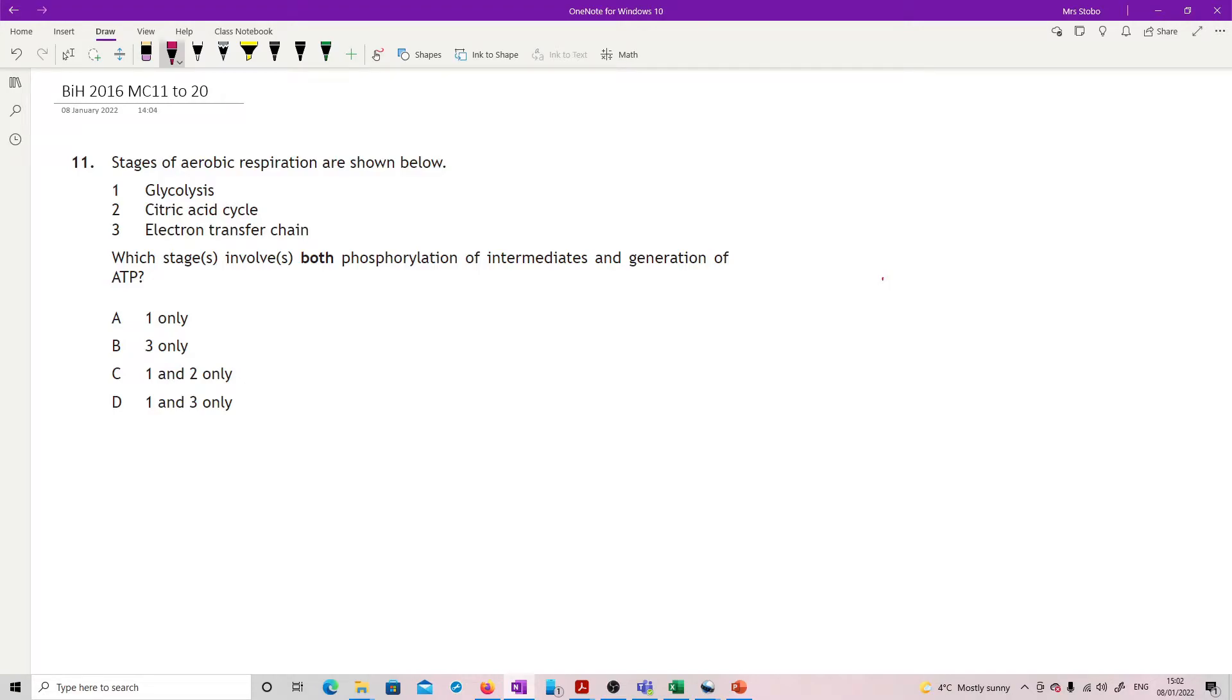Paper 11 to 20 on the multiple choice for the 2016 paper. Question 11: Stages of aerobic respiration are shown below. We've got glycolysis, citric acid, and electron transfer chain. Which stage involves both phosphorylation of intermediates and generation of ATP? It's the 'both' that is obviously the most important thing.